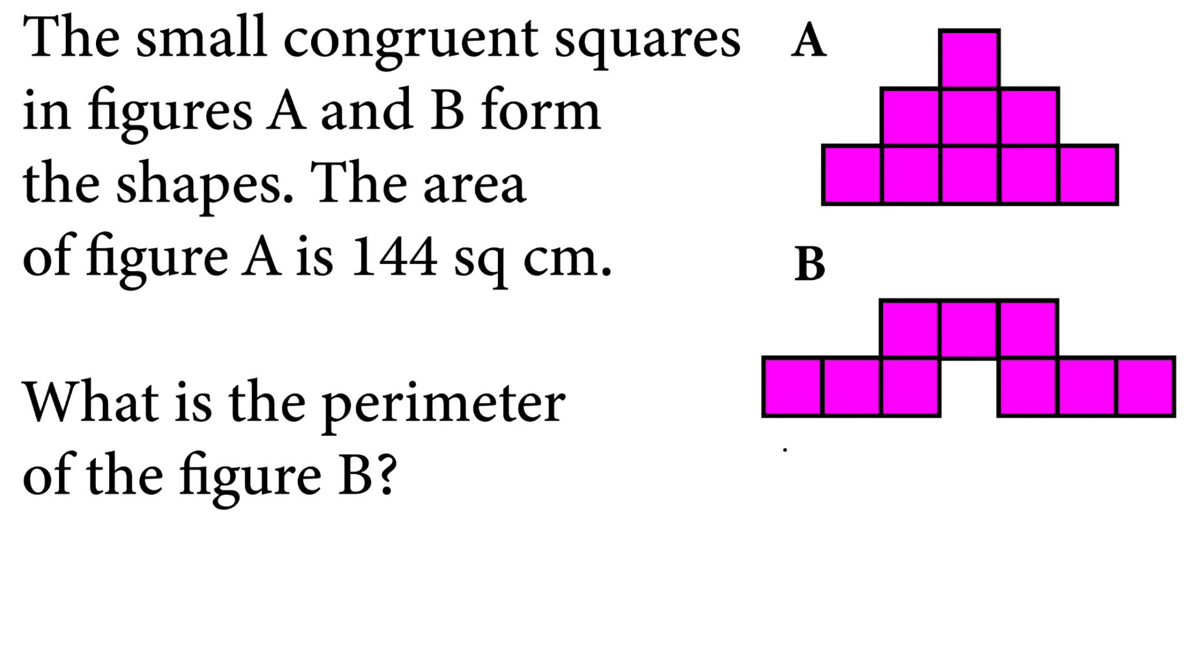In this video, we will solve this fifth-grade Math Olympiad question. Let's read the question: The small congruent squares in figures A and B form the shapes. The area of figure A is 144 square centimeters. What is the perimeter of figure B?